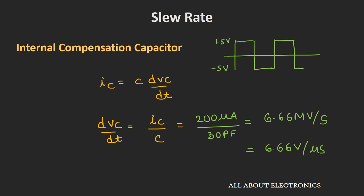For most op-amps, the value of slew rate is identical for the positive as well as the negative voltage swing. That means whether your output is going from negative to positive or positive to negative, the slew rate is the same in both directions.